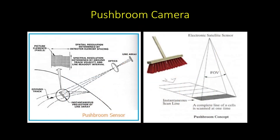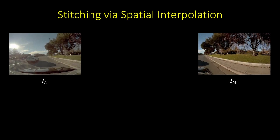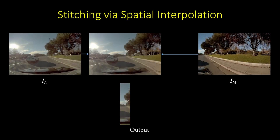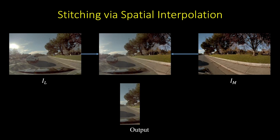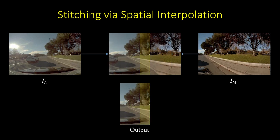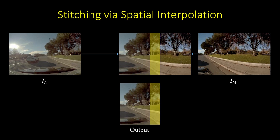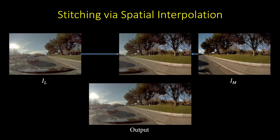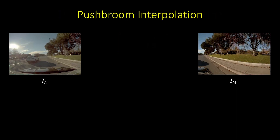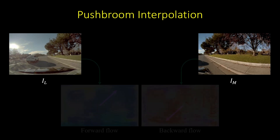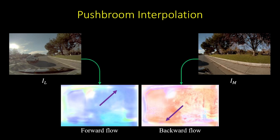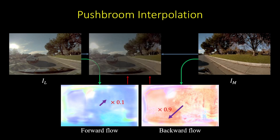To align the local content, we cast the stitching problem as a spatial interpolation problem, inspired by the push broom camera. We generate K intermediate views between two input views and take a vertical slice from each intermediate view. The K vertical slices create a smooth transition from one camera to another.